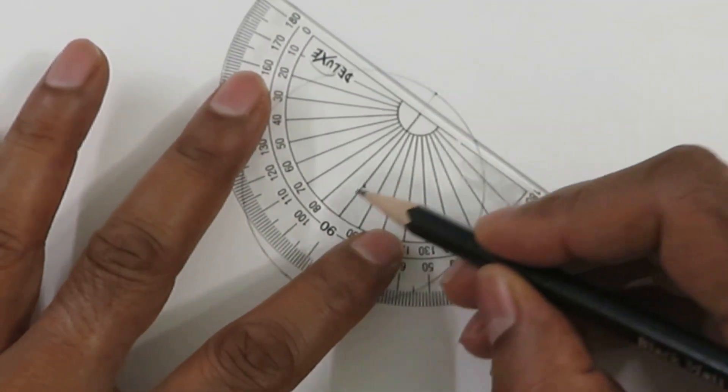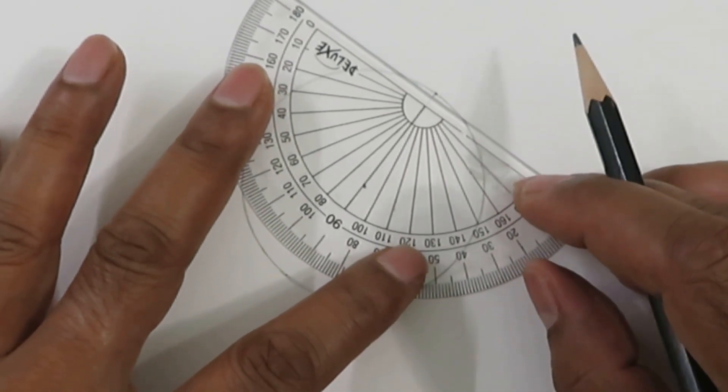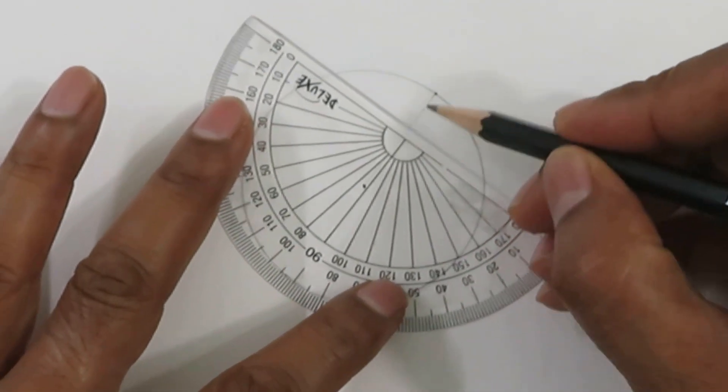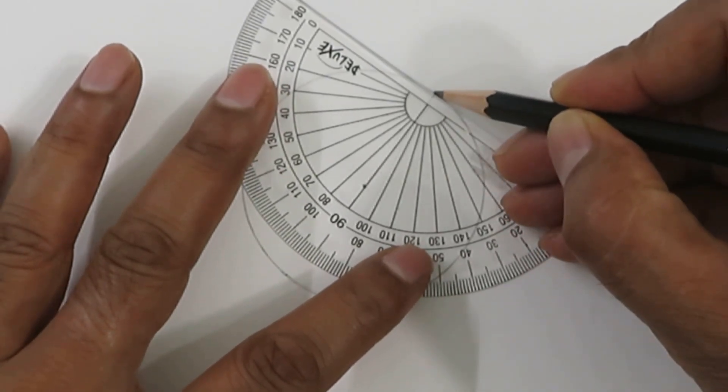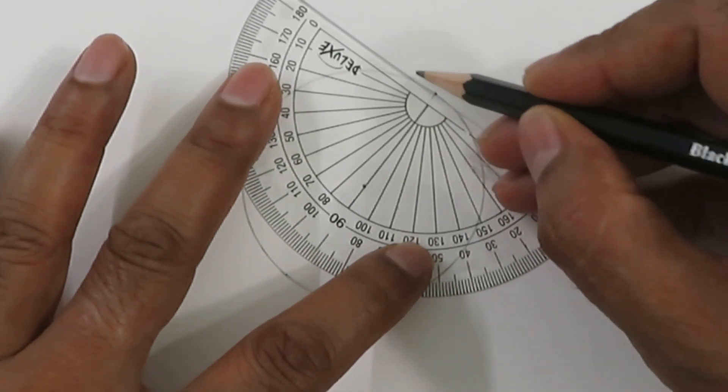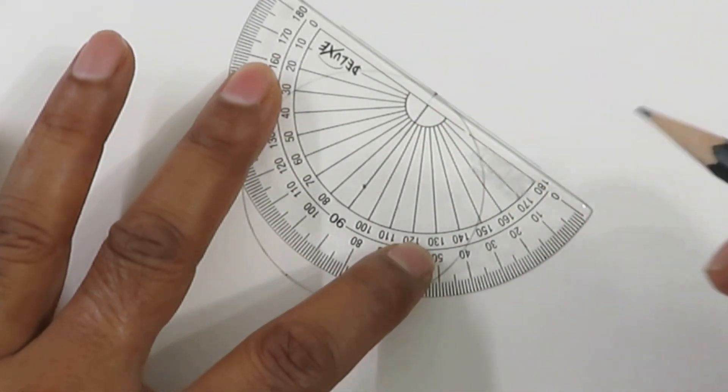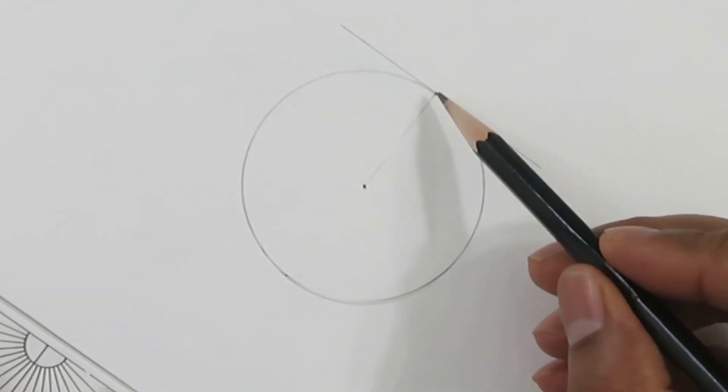You align this along the radius that you have just drawn, and once it is aligned you can draw a line. This is the tangent to this circle.